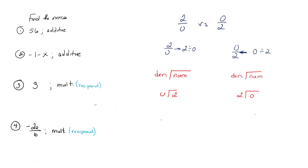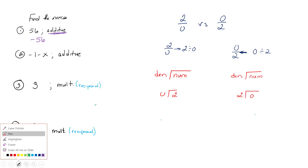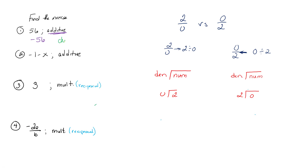Okay, so let's do some examples. I want to find the inverse — in the first example, the additive inverse of 56. From the previous discussion, I'm going to have 56 as part of the answer, but since it's the additive inverse, this number is going to change signs. So the additive inverse is negative 56. Checking: positive 56 plus negative 56 equals 0. There is my check.